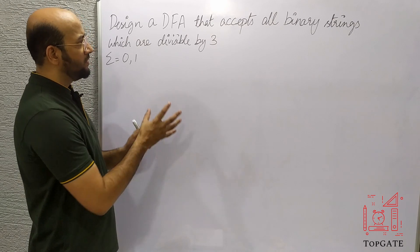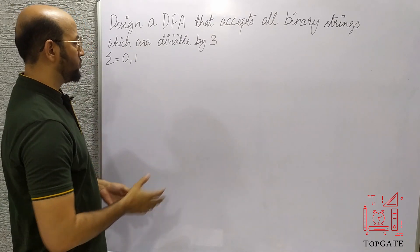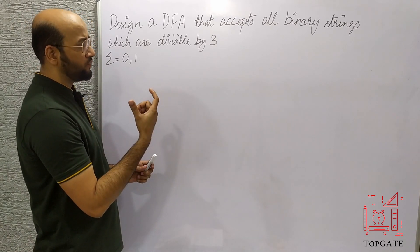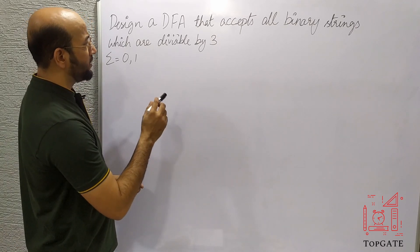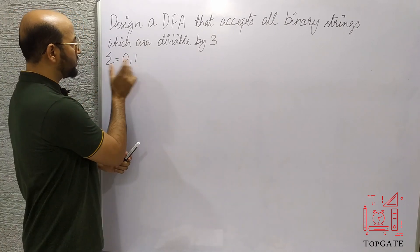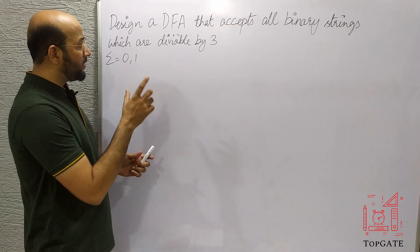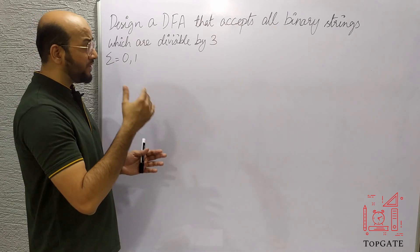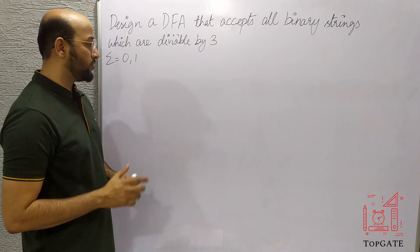It is a very easy question, just looking like very complex but it is a very easy question. Let us first understand what kind of language we have and what kind of shortest possible strings we can have. We have to design a DFA that accepts all binary strings over the alphabet {0,1}, and we need to accept only those strings which are divisible by 3 — that is, when we divide that number by 3 we should get the remainder as 0.